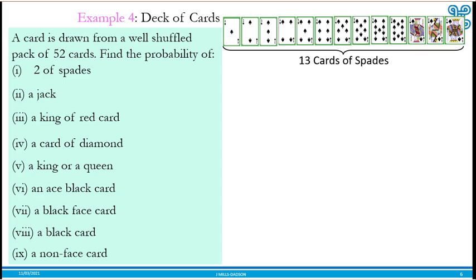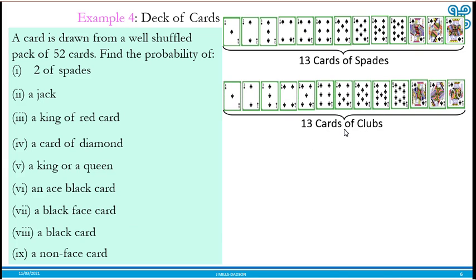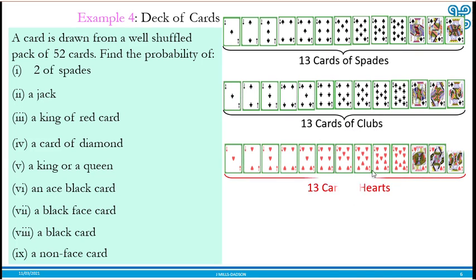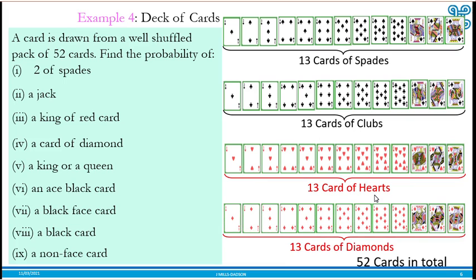We have 13 cards of spades, 13 of them from ace to the king. Then we have 13 cards for clubs, 13 for hearts, and 13 for diamonds, totaling 52. So when you see 52, we mean this composition.